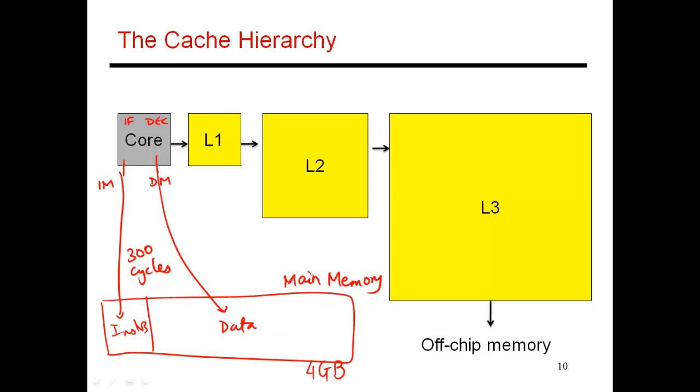So the first thing you do is you look up your L1 cache. So the L1 cache is a small, let's say, 32 kilobyte structure. And since it is so small, it can be accessed within one cycle or, say, two cycles. So I'll assume a one cycle access time.